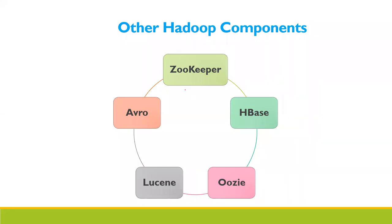Today we will see about other Hadoop components. The other Hadoop components are: first, Zookeeper; second, HBase; third, Uzi; fourth, Lucene; and Avro. These are the other Hadoop components that we are going to discuss today.